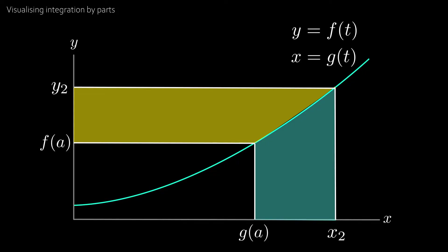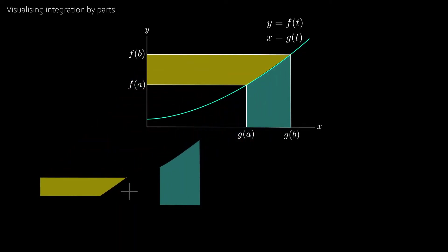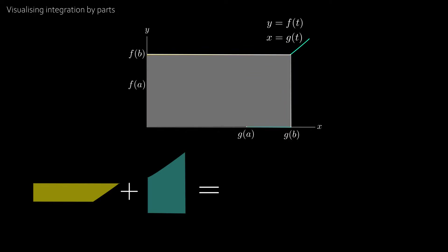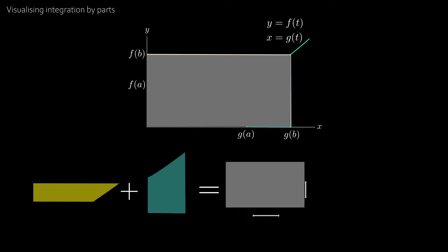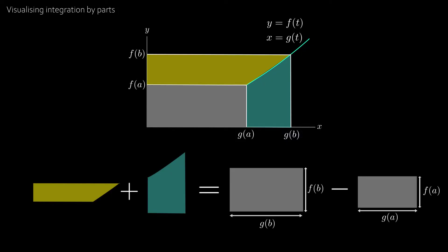And similarly, x2 is g of b, so y2 is f of b. Essentially t equal to a and t equal to b gives us our two coordinates. Now what we can see from this is that the yellow area plus the blue area is equal to this large rectangle with length g of b and height f of b minus this small rectangle with length g of a and height f of a.